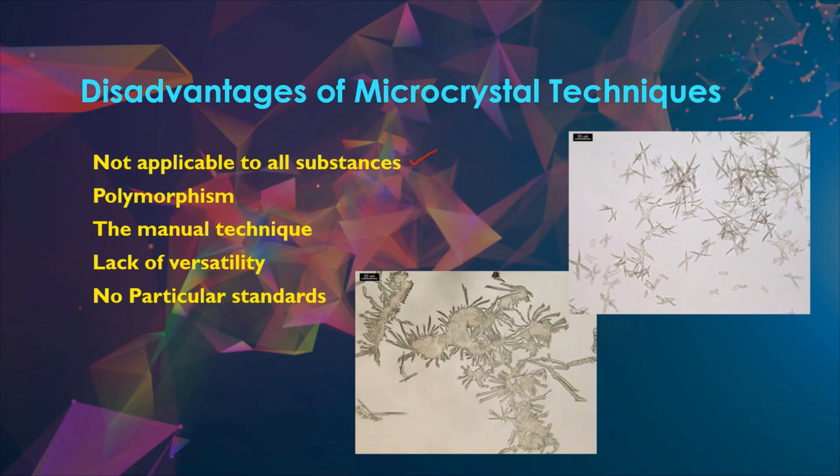Presence of additional crystal-forming agents may interfere with the precipitation of target compound. This interference may cause either distortions or variations in the expected crystal form, also known as polymorphism. This may complicate the identification process. In such cases, a purification procedure is needed by thin layer chromatography or any extraction method. This is recommended before microcrystalline analysis is done.